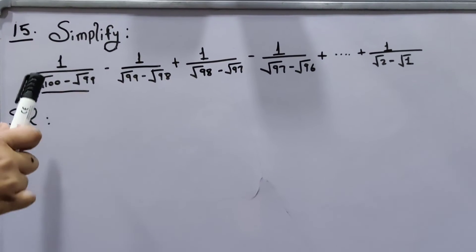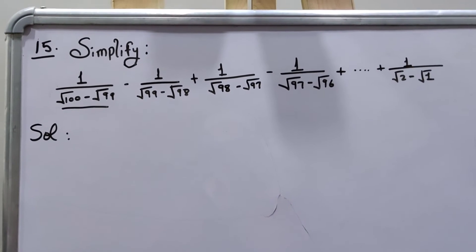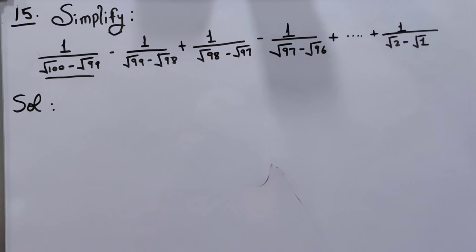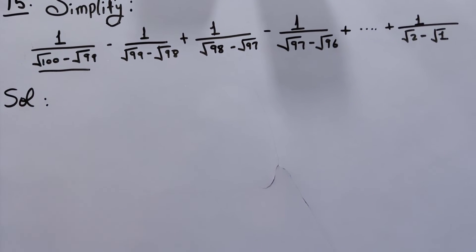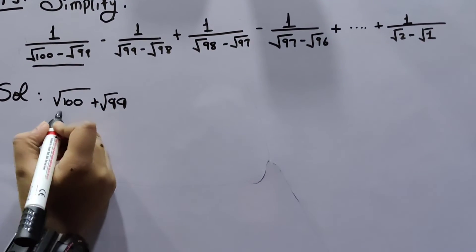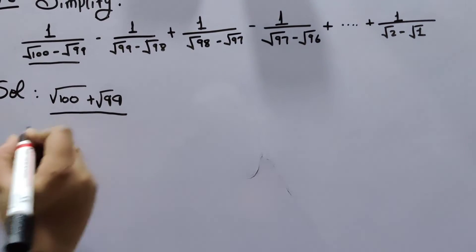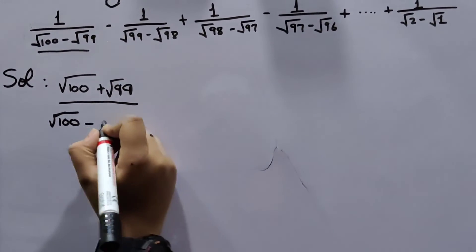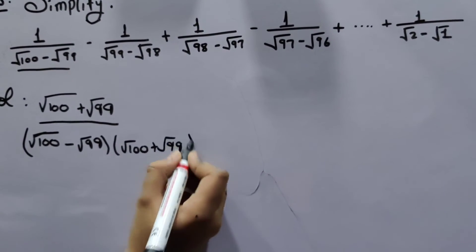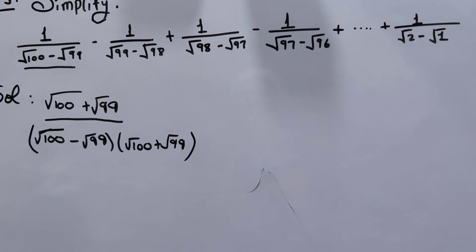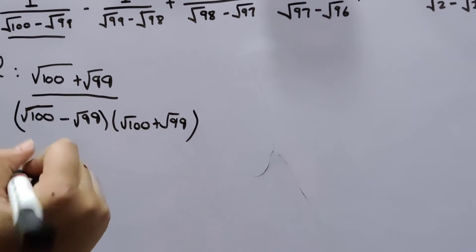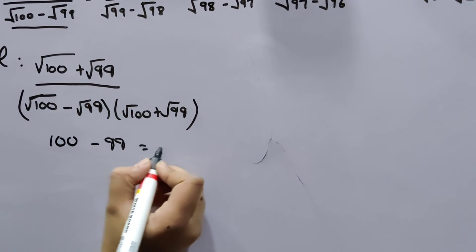In rationalizing these types of denominators of the form root A minus root B, we will take root A plus root B, because A minus B into A plus B equals A squared minus B squared. So we multiply both the numerator and denominator by root 100 plus root 99. One multiplied by this gives root 100 plus root 99 in the numerator.